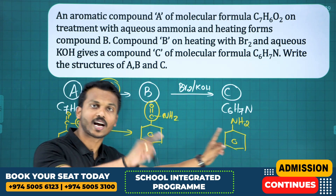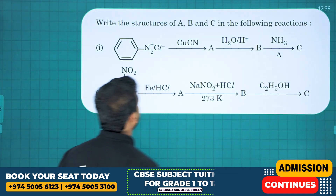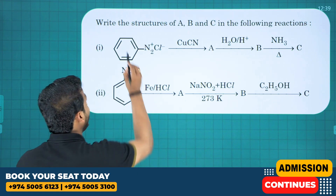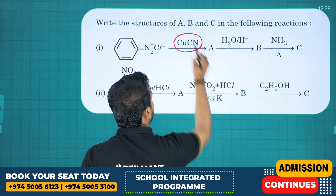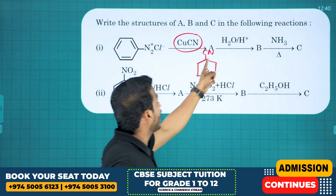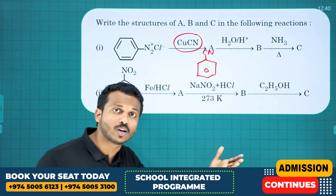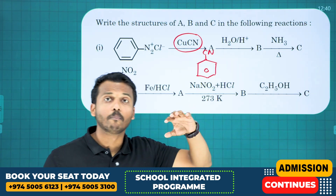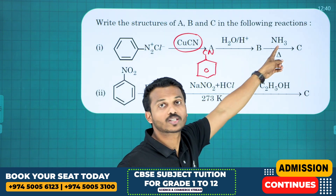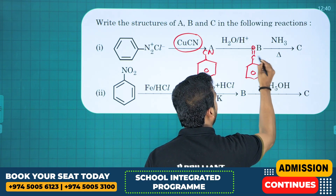Question number two: write the structures of A, B, C. Starting from benzene diazonium chloride, on treatment with CuCN we get cyanobenzene. Cyanide on hydrolysis — acid hydrolysis gives amide (partial) or carboxylic acid (complete). We select carboxylic acid here because the next step involves ammonia, so this gives benzoic acid (COOH).